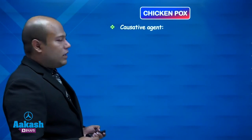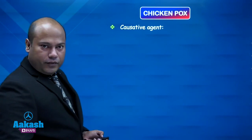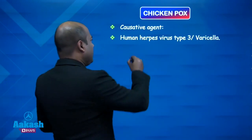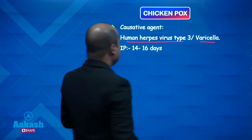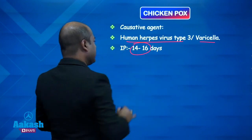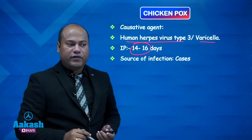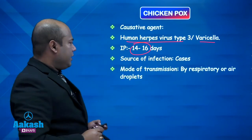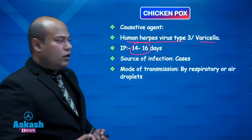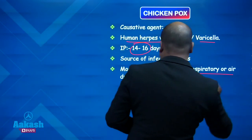Now coming to chickenpox: the causative agent is varicella zoster, also called herpes zoster — it is human herpes virus type 3. The incubation period is 14 to 16 days. The source of infection is mainly cases, and the mode of transmission is by respiratory droplets, since it is a respiratory infection.